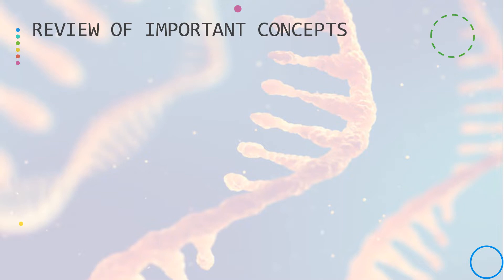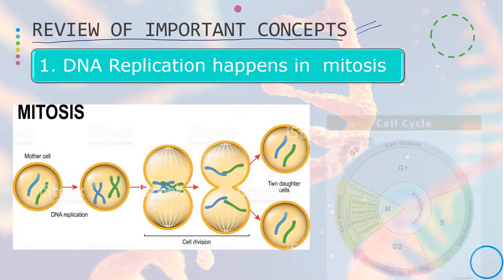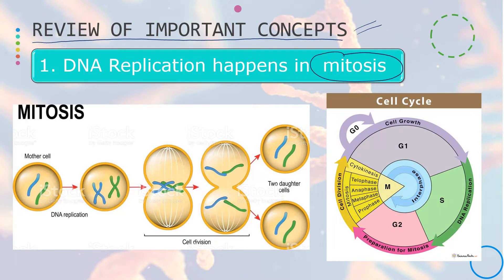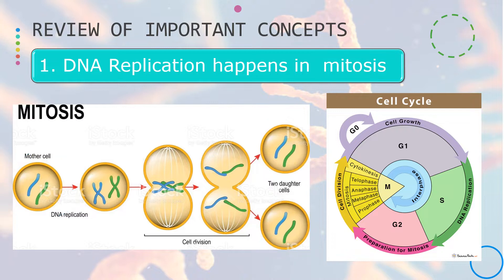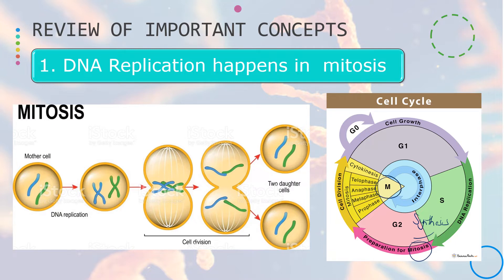Let's now have a review of the different concepts that are important to understand before we proceed with the DNA replication process. This will also serve as your review for the previous module. First of all, DNA replication happens during mitosis. Mitosis is when a cell splits or divides into two identical cells, meaning these cells have the same DNA as the mother cell. Therefore, mitosis has the main function of DNA replication. More specifically, DNA replication happens in the S phase, known as the synthesis phase — the phase before the cell enters into mitosis.